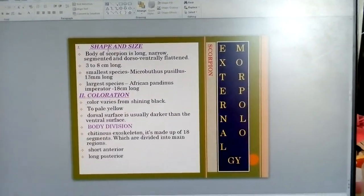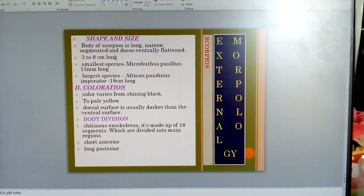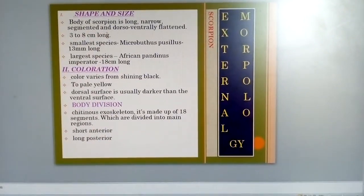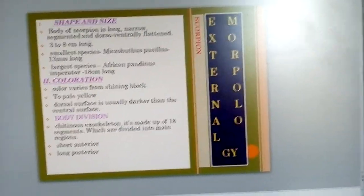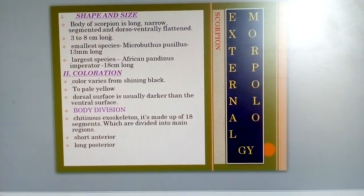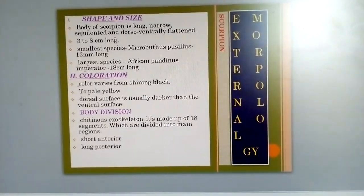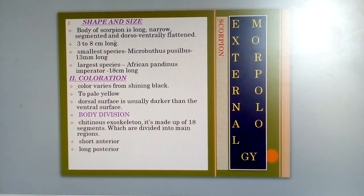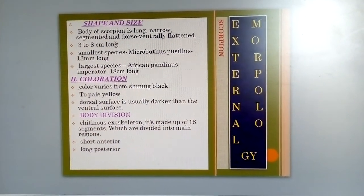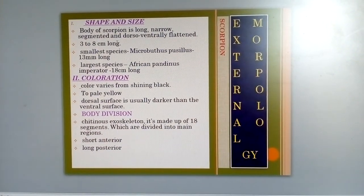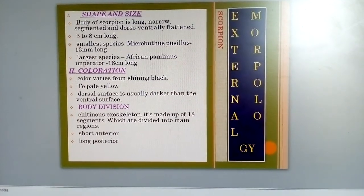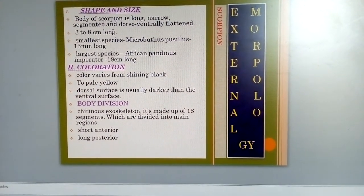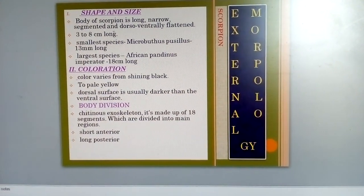Regarding shape and size, the body of the scorpion is long, narrow, and ventrally flattened. There are many species varying in color — pale yellow and shining black are common. The exoskeleton is short anteriorly and long posteriorly.